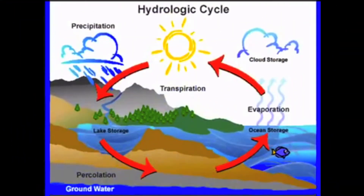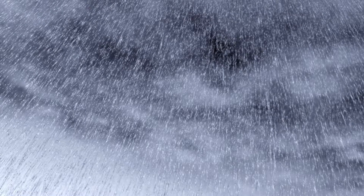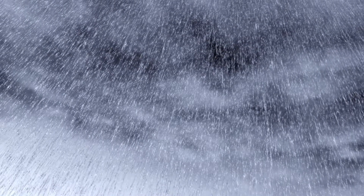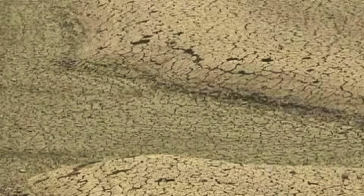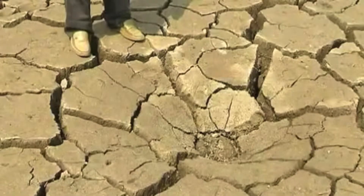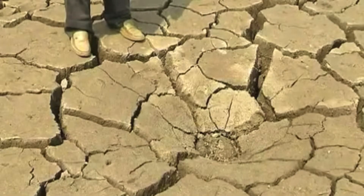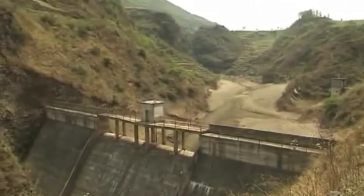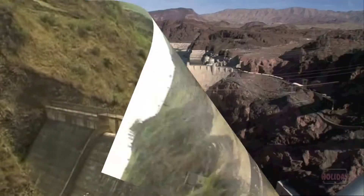Dams can only be built in certain areas that have constant precipitation, because if there is a low level of rain or there is a drought, there will be issues in the amount of electricity that can be produced and may harm surrounding habitats.